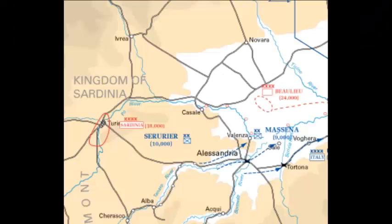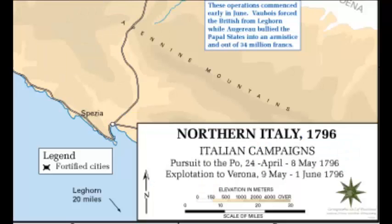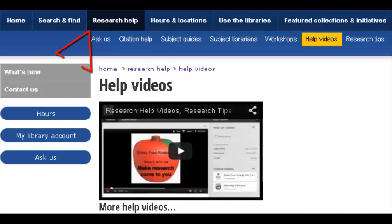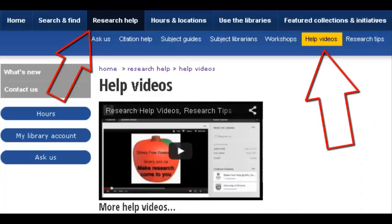If the image is a map or remote sensing image like a satellite image, include the term 'map' after the title and the scale if available. You can also watch our video on finding maps.